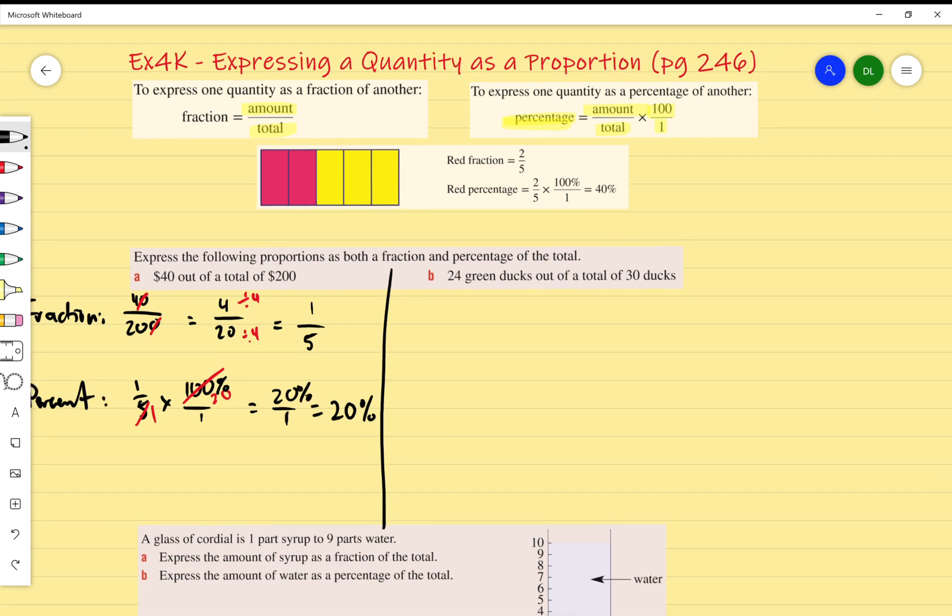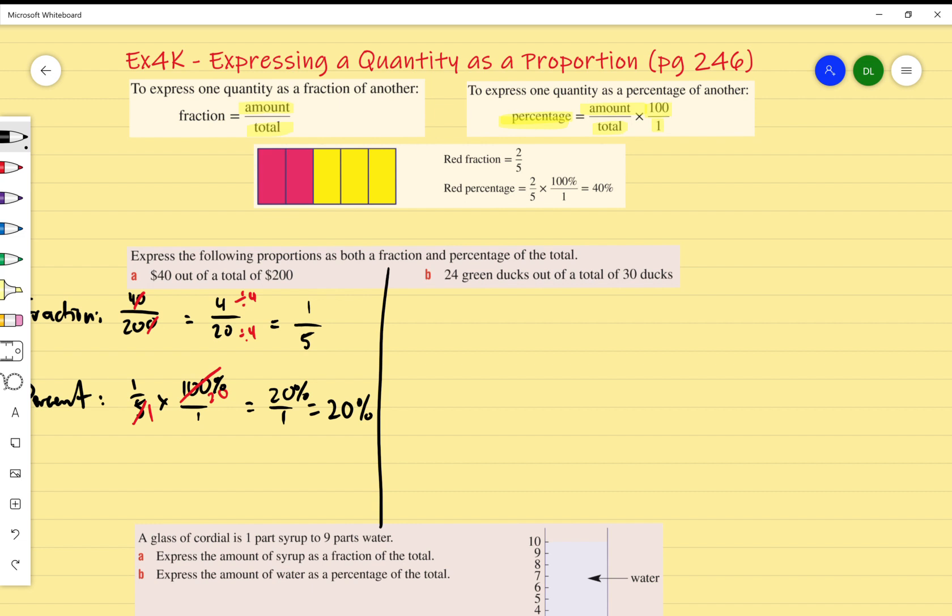Let's do this example on the right. I've got 24 green ducks out of a total of 30. So my 24 is on top and the 30 is on the bottom. I'm going to simplify it. What number goes into both 24 and 30 besides 1? 6. Divide both sides by 6 and I end up with 4 over 5.